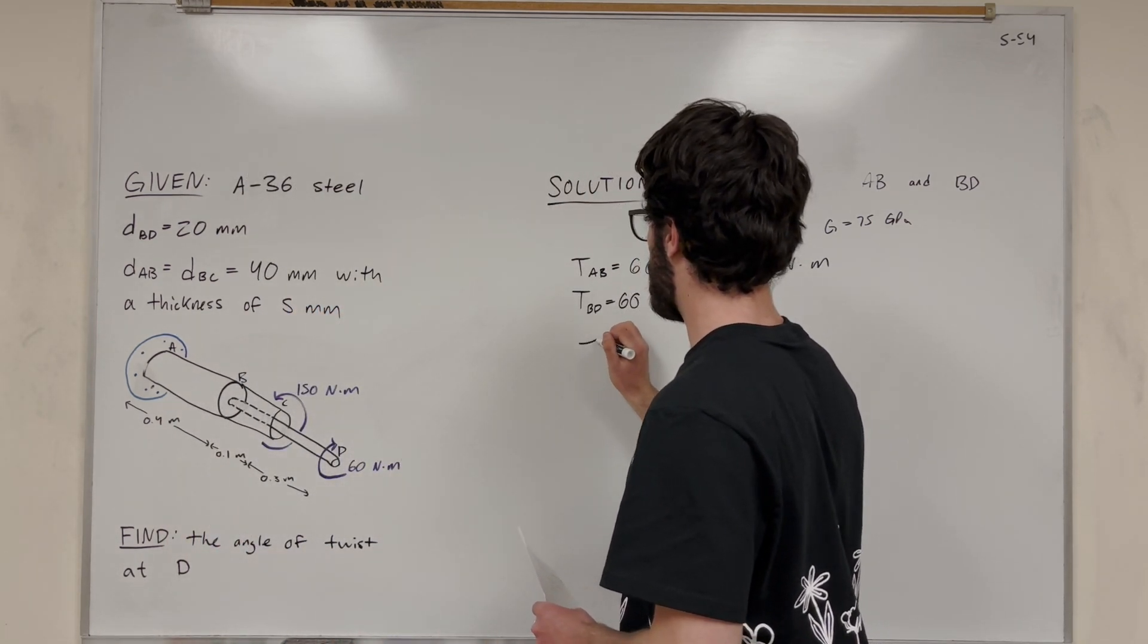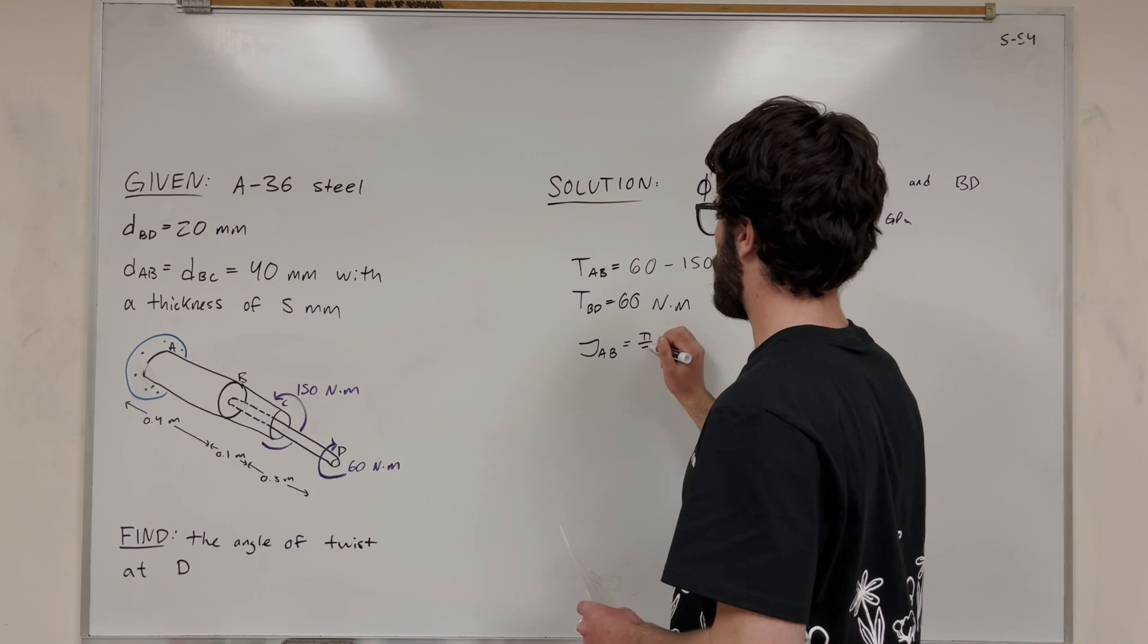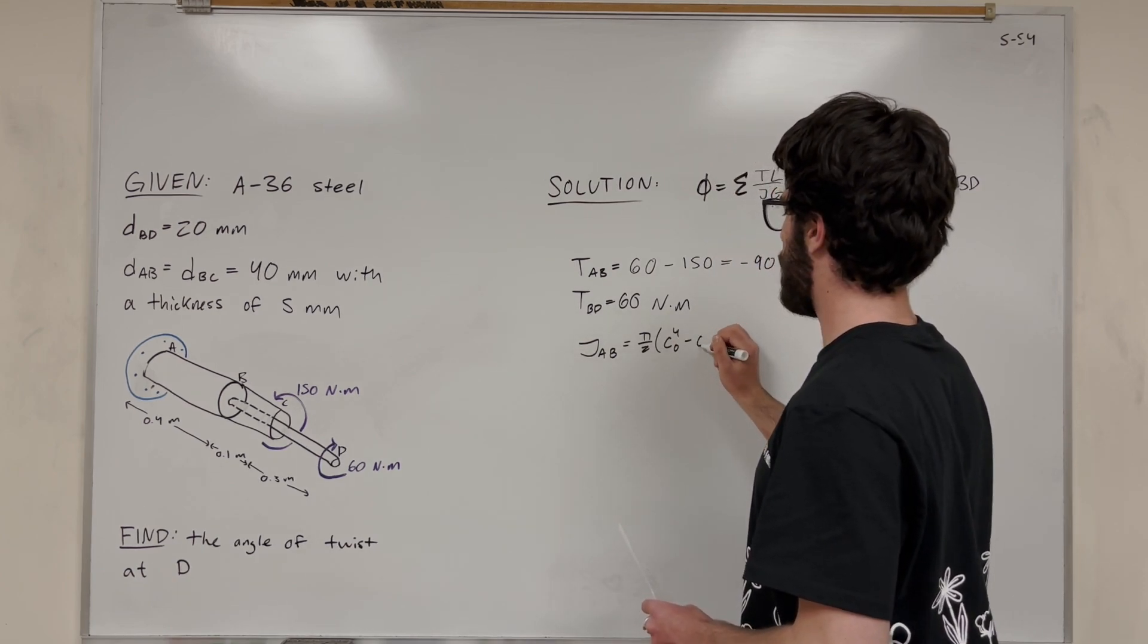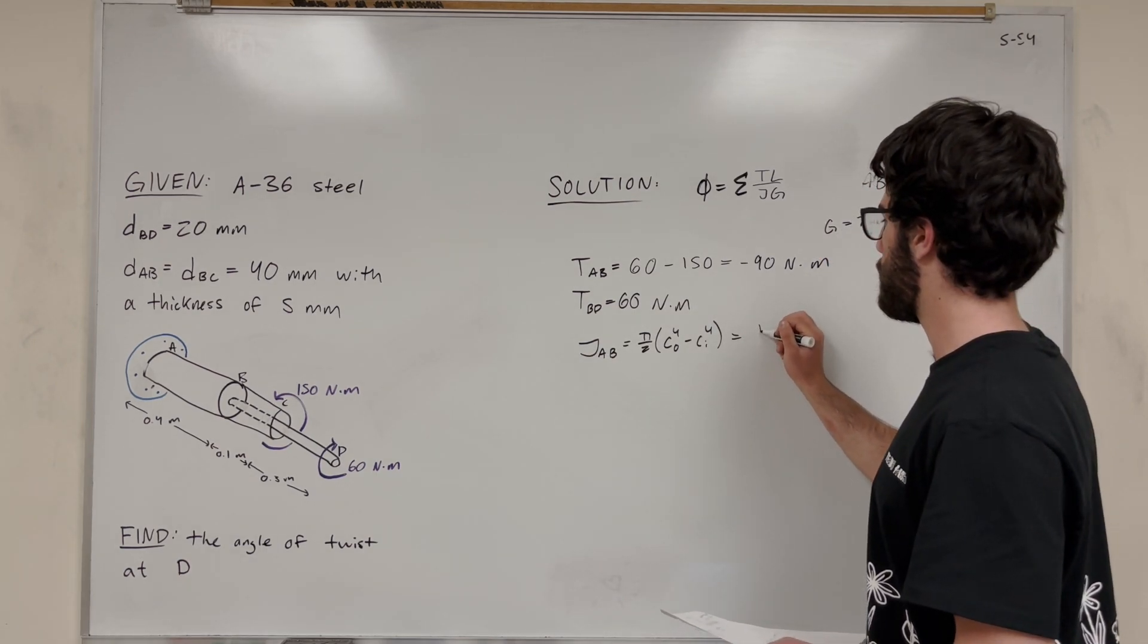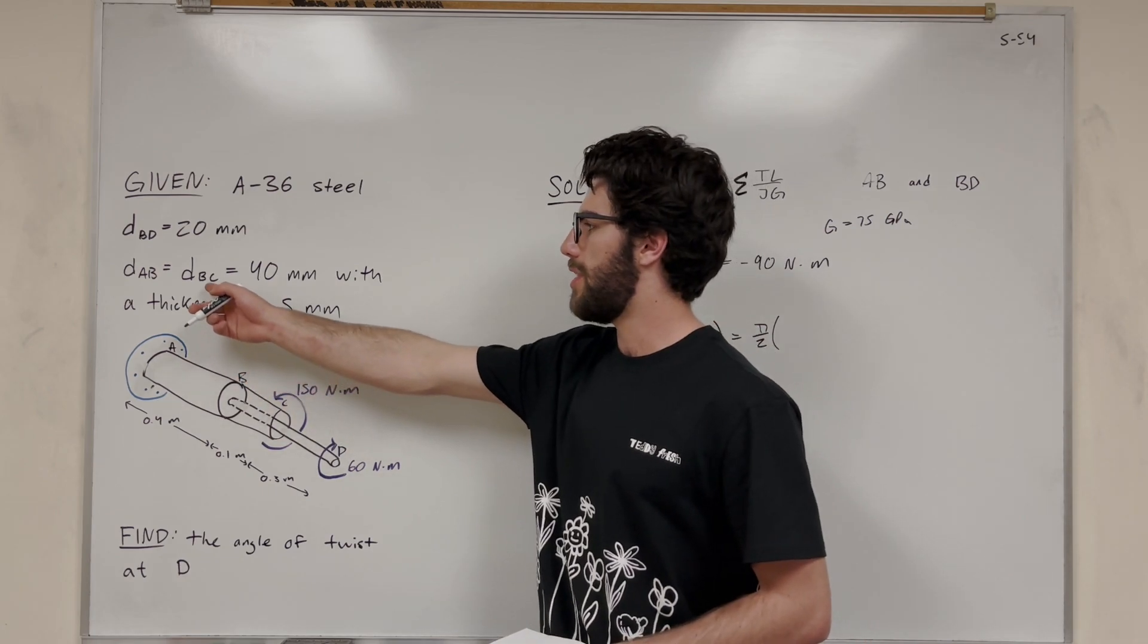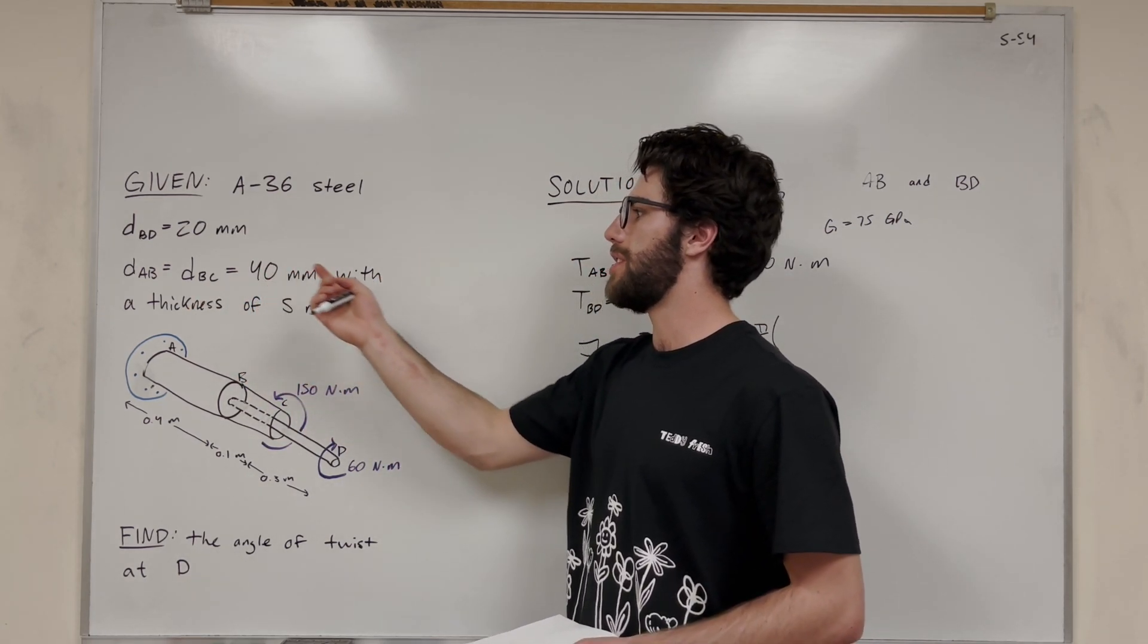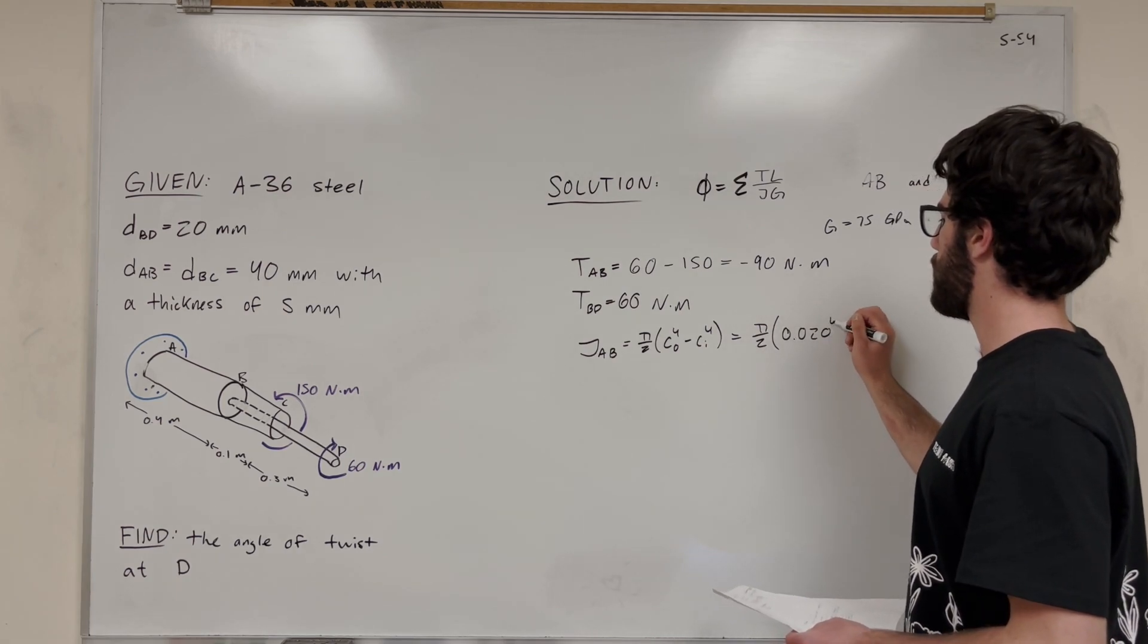So let's start with AB. So polar moment of inertia AB is equal to, the equation is pi over 2, diameter outer to the 4th, minus diameter inner to the 4th. So let's plug in the numbers for this. We're going to do pi over 2. So outer radius, we're not doing diameter now, we're doing radius, is 40 millimeters in diameter, so it's going to be 20 millimeters. So 0.020 to the 4th.